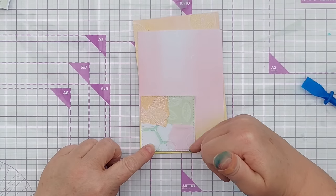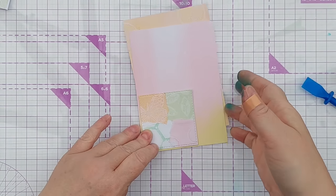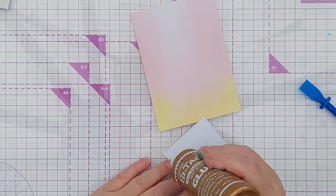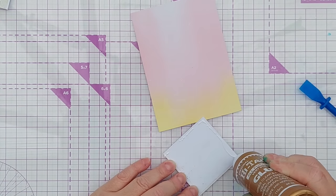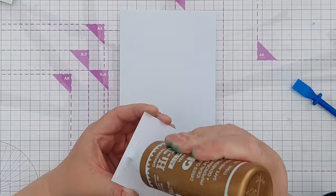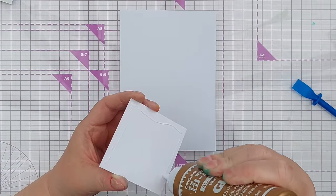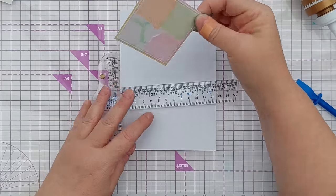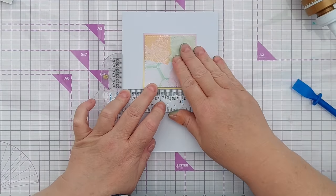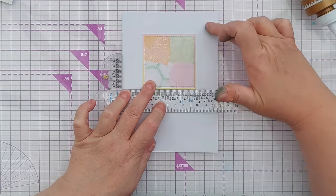So I'll add glue to the back of this, stick it on there and trim it out. So my card blank is five by seven inches and I will stick this around about here so there's an equal size gap.